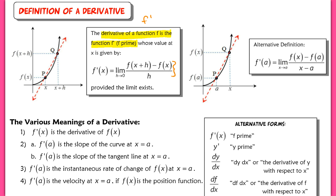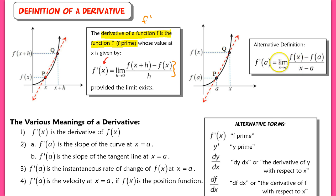Note that the derivative is a function in itself. When we look at the derivative, we're talking about a function, and it also indicates the slope of the tangent line at that value of x. There's also an alternative definition: f prime of a equals the limit as x approaches a of f(x) minus f(a) over x minus a.